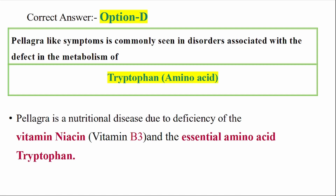Pellagra is a nutritional disease due to deficiency of the vitamin Niacin. Niacin is Vitamin B3, and the essential amino acid related to it is Tryptophan. Pellagra is a deficiency disease due to deficiency of Vitamin B3 — Niacin.